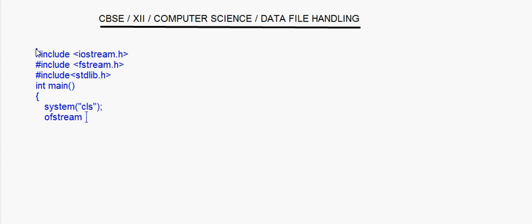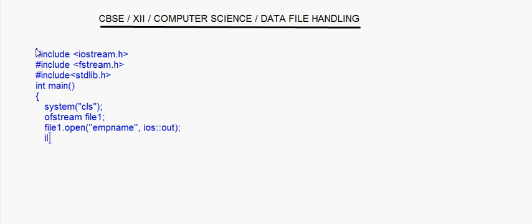Now I'm going to take one file object of ofstream — I call it file1. Now file1.open — I call it emp name — and I'm opening it in the output mode, which is the default mode.